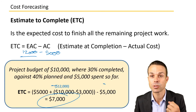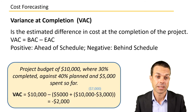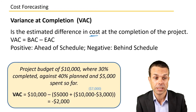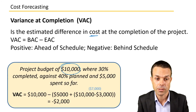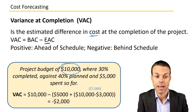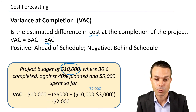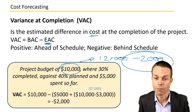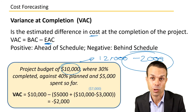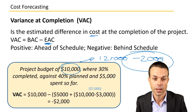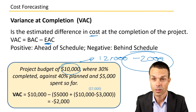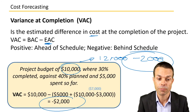The Variance at Completion is the estimated difference in cost at the completion of our project. It equals the Budget at Completion — our ten thousand dollar budget — minus the Estimate at Completion of twelve thousand. So ten thousand minus twelve thousand equals negative two thousand. A negative variance means we're behind in cost; if it were positive, we'd be ahead — we would have delivered more value than planned.